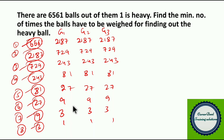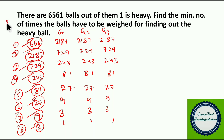The minimum number of times the balls have to be weighed to find the heavy ball is 8 times. Since 6,561 equals 3 to the power 8, the exponent gives the answer directly. So 8 is our answer.